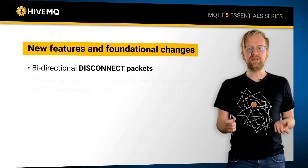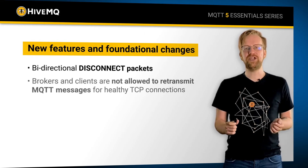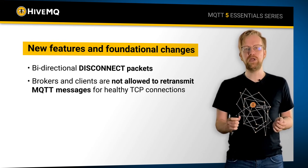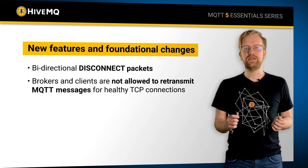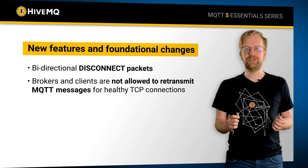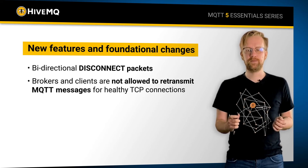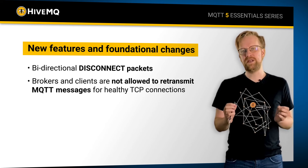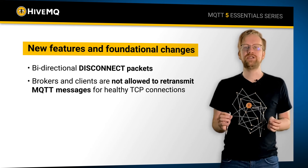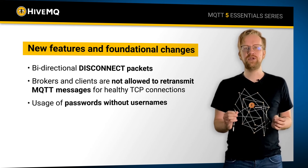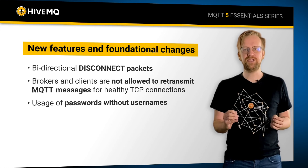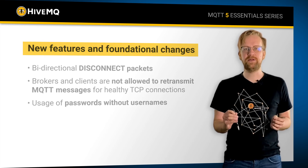With the MQTT 5 specification, it is no longer allowed for brokers to retransmit unacknowledged publishers. A small but nifty change is that clients can now use passwords without a username for authentication in the connect packet.